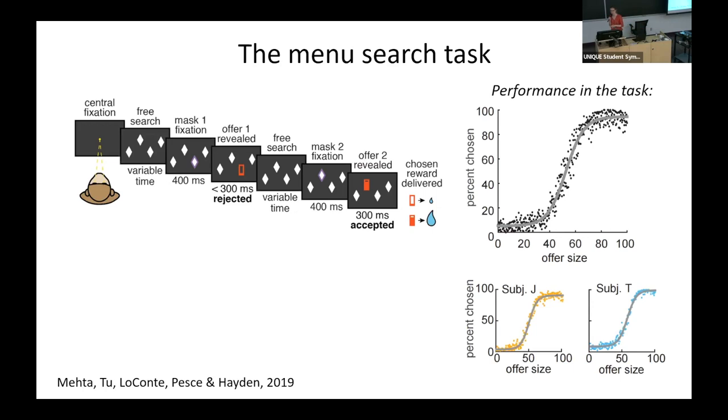What we could see in behavior is that monkeys understood the task well. So whenever the offer was very low, they rarely chose this offer. And when the offer was high, they were choosing the offer quite often. So we had two monkeys doing this task. And you can see that both monkeys were doing it well and pretty similarly. It was the same pattern. So overall, for the good offers, 95% of the time monkeys were selecting these good offers. But you can see that it's not like 100% all of the time. So I'll get back to that later.